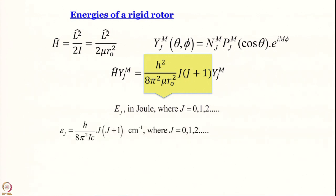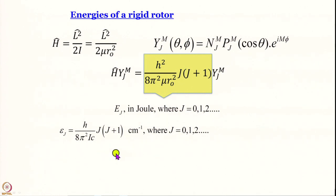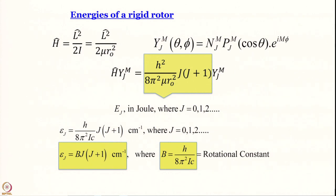As spectroscopists, we prefer to work in centimeter inverse rather than Joules, especially for rotational spectroscopy. So we convert: ε_J = h/(8π²IC) × J(J+1), which in wavenumber units is simply ε_J = B × J(J+1) cm⁻¹, where B = h/(8π²IC) is called the rotational constant.